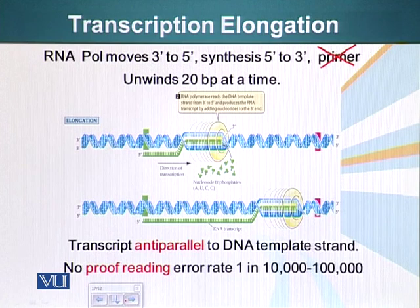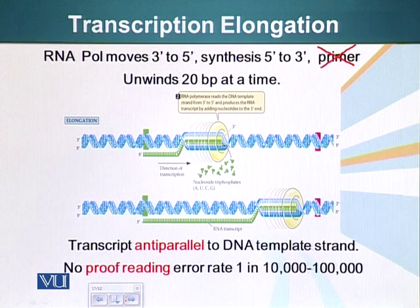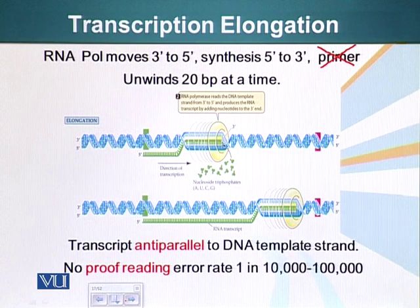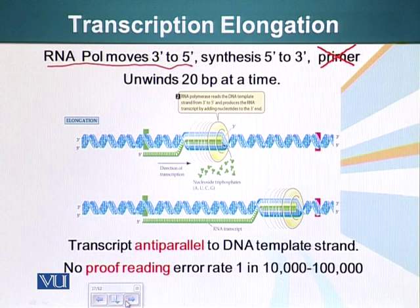RNA polymerase moves in the 3 prime to 5 prime direction along the template strand. As I have mentioned before, all polynucleotide synthesis — whether DNA or RNA — can only be extended in the 5 prime to 3 prime direction. Remember we have talked about the 3 prime hydroxyl. RNA polymerase moves in the 3 prime to 5 prime direction along the template, but synthesis of RNA is in the 5 prime to 3 prime direction.